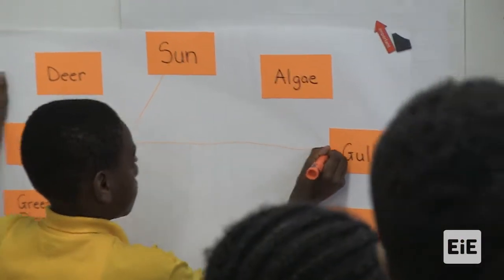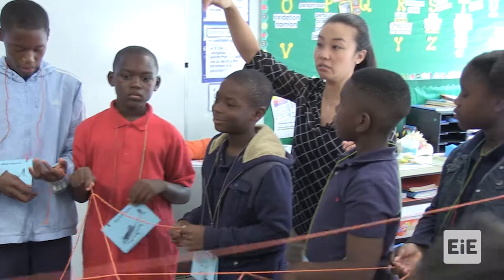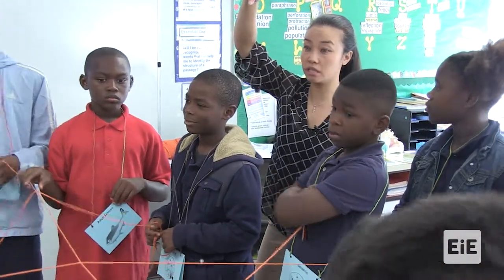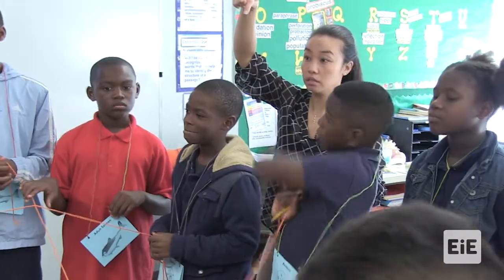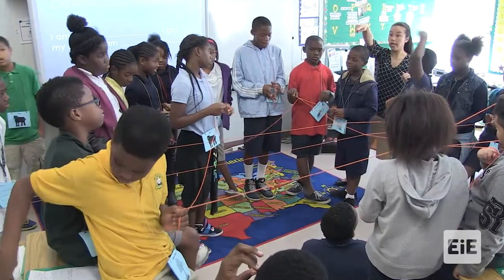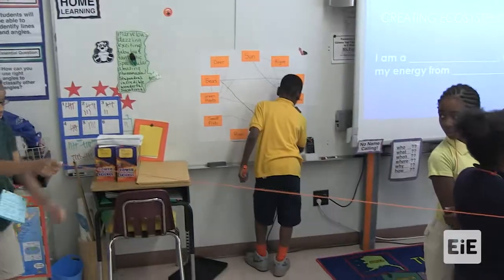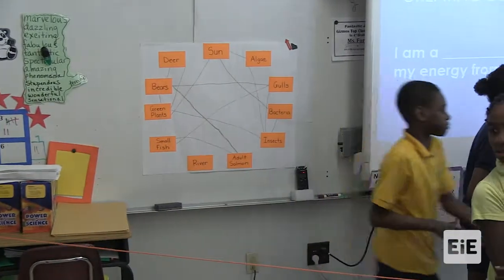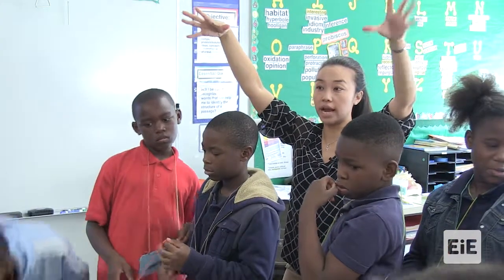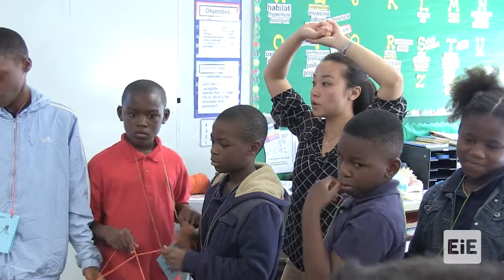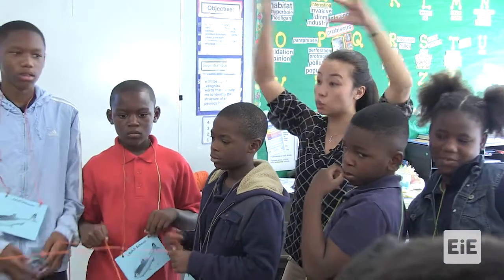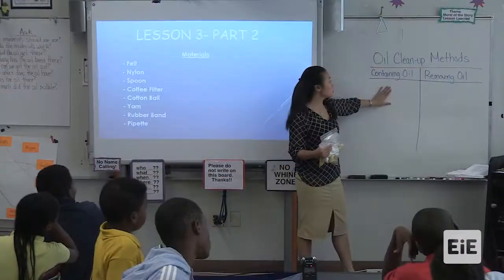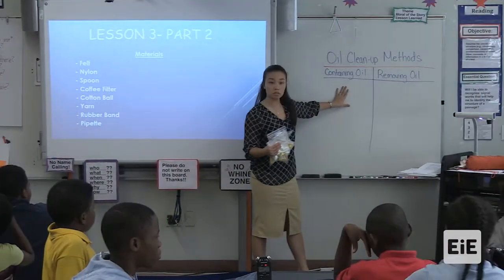If we lose somebody in our ecosystem, will something else be affected? Yes — it trickles down. It is all connected and we work as a whole. So is it important that, as environmental engineers, we need to know how all this works? Yes, we do.